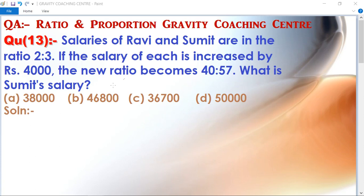In the given question, Ravi and Sumit's salaries are given as 2:3, and when both salaries increase by 4000, the new ratio becomes 40:57. So what is Sumit's salary?